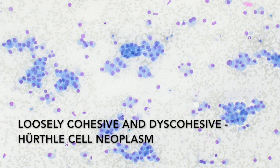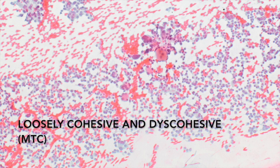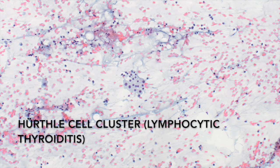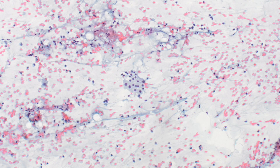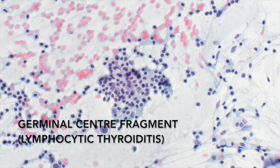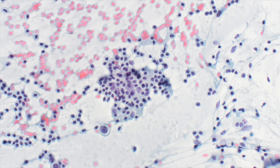Another common pattern is loosely cohesive and discohesive cells. This can be seen in Hürthle cell neoplasms, as well as in medullary thyroid carcinoma. You might also see this pattern, albeit with a different cell type, in lymphocytic thyroiditis, with clusters of Hürthle cells, as well as clusters of germinal centers along with dispersed lymphocytes.